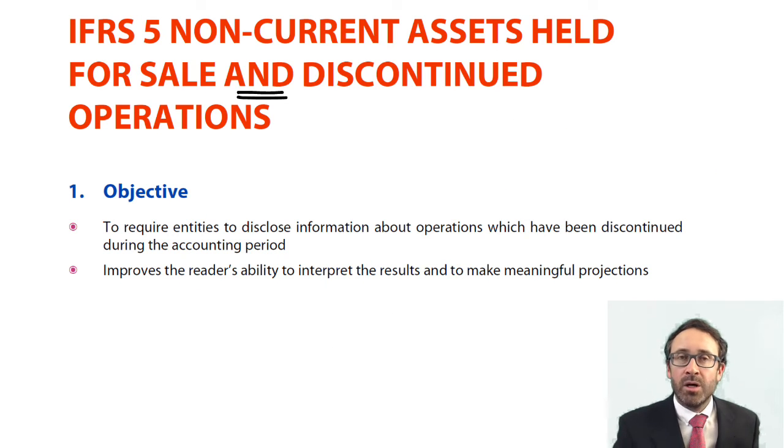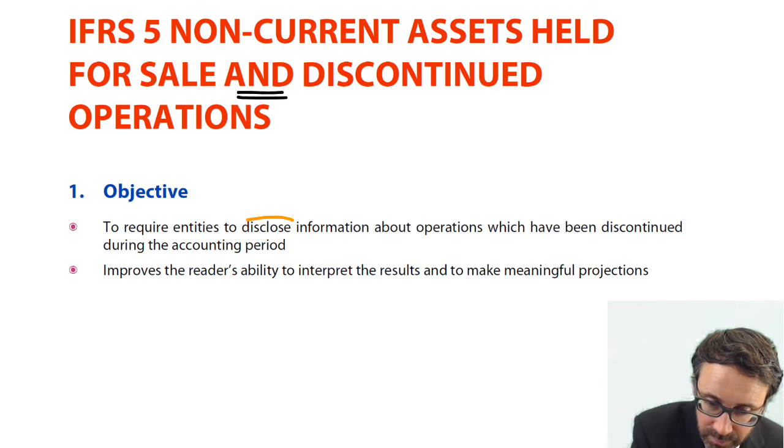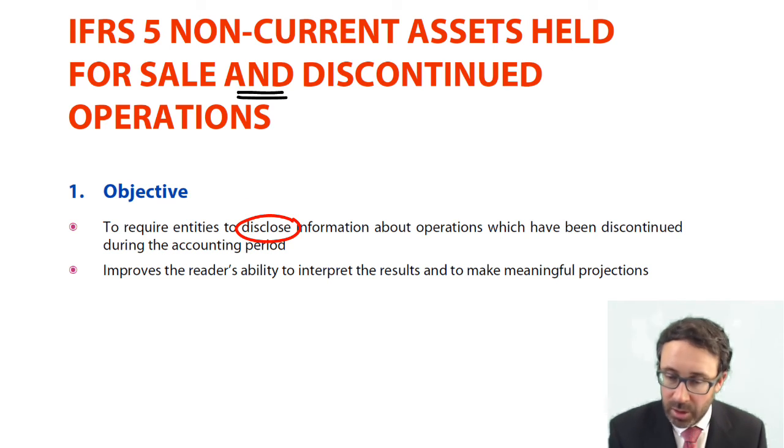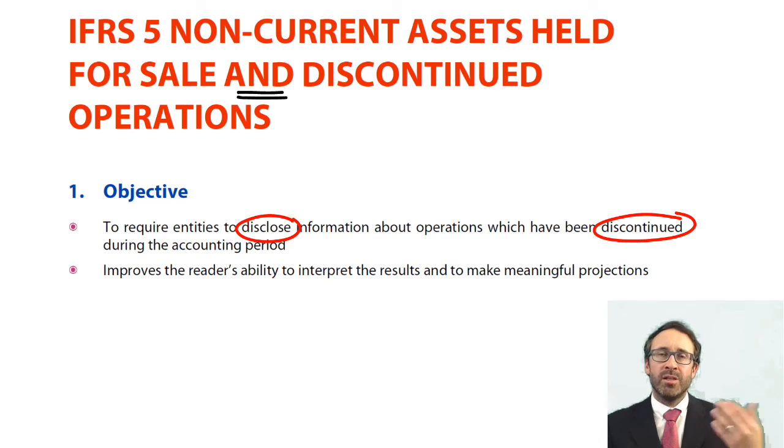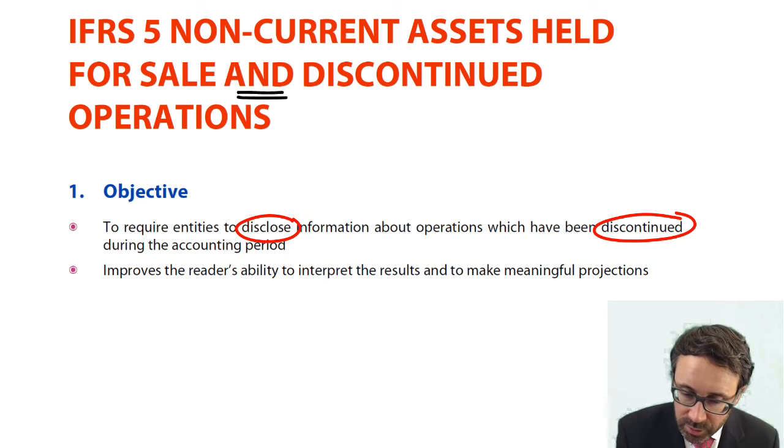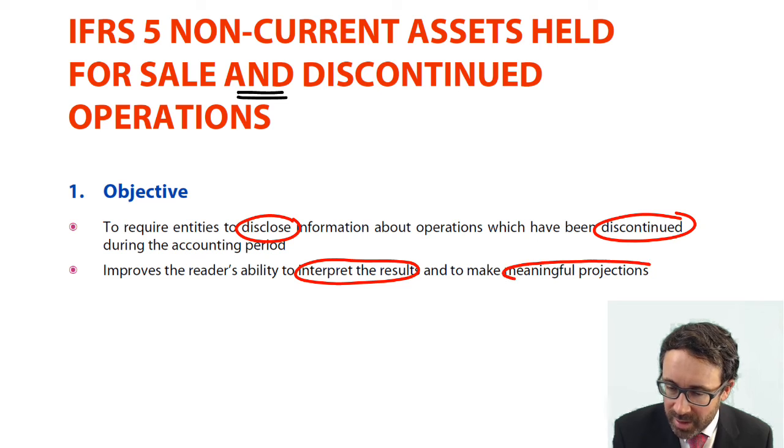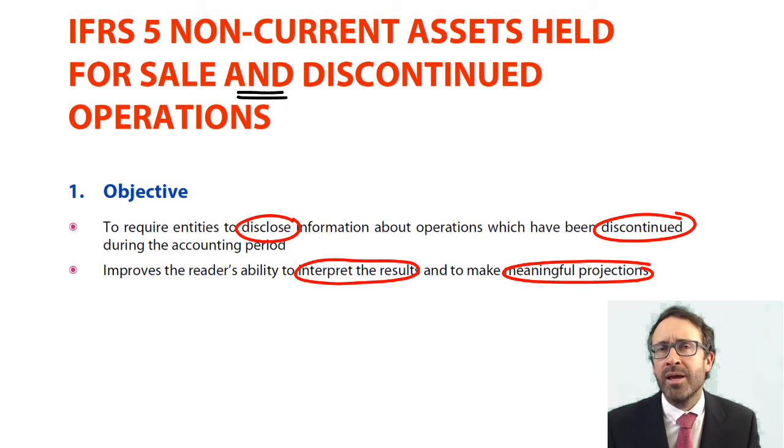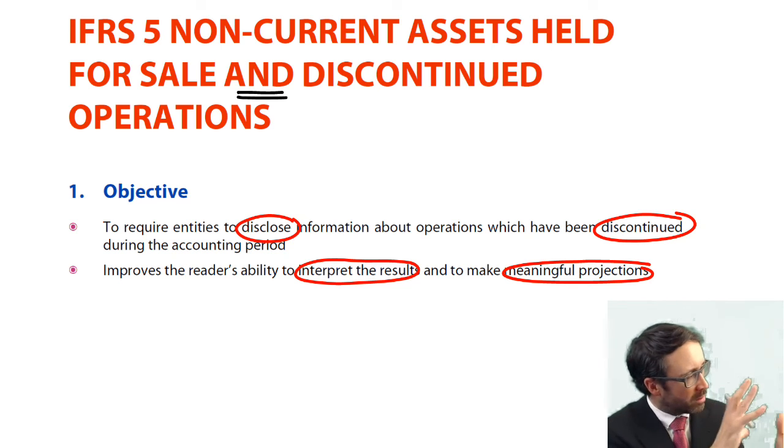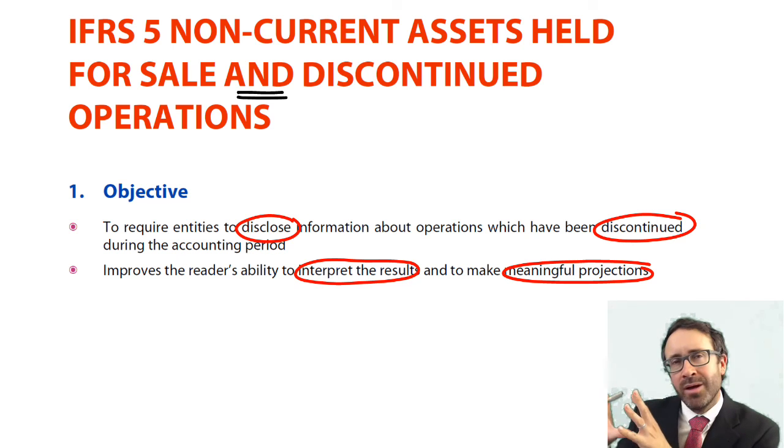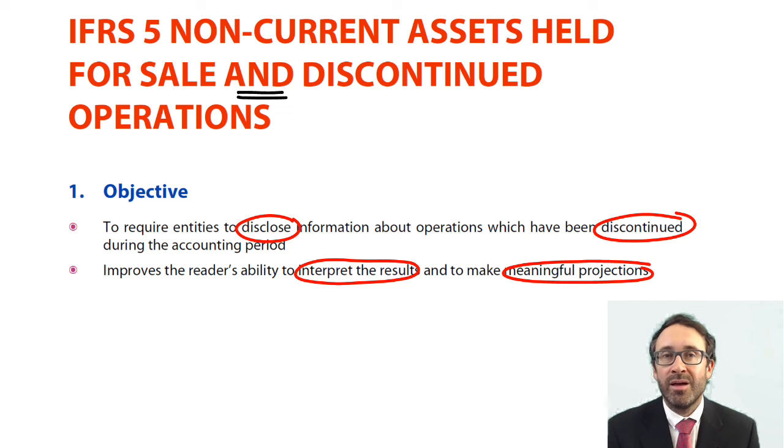The overall objective of IFRS 5 is disclosure in relation to discontinued operations, whether on the SFP or statement of profit or loss. It gives the user of the accounts a better opportunity to interpret the results and make meaningful projections about the future. That non-current asset sale won't be there next year. Those discontinued operations revenues, costs and profits won't be there next year. So you get predictability. That's the issue with financial accounting - it all looks at what's happened in the past. With IFRS 5, you can give an idea about the future.